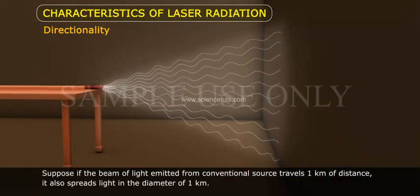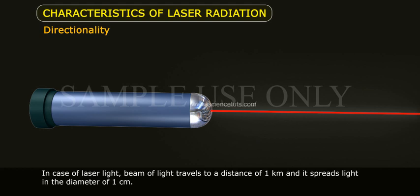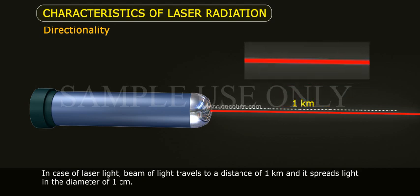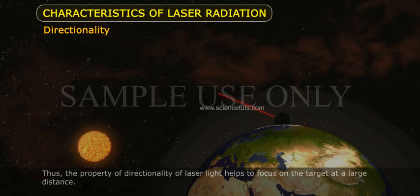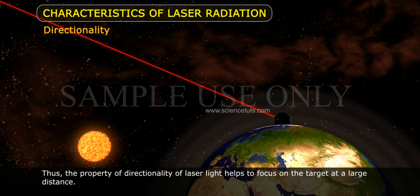Suppose the beam of light emitted from a conventional source travels 1 km of distance, it also spreads light in a diameter of 1 km. In case of laser light, a beam of light travels to a distance of 1 km and spreads light in a diameter of 1 cm. Thus, the property of directionality of laser light helps to focus on a target at a large distance.